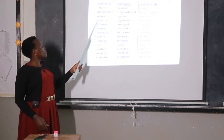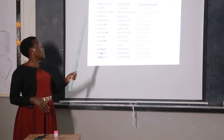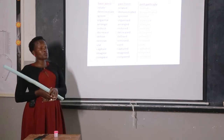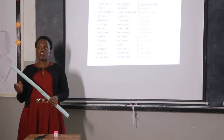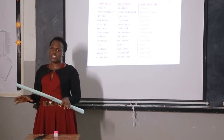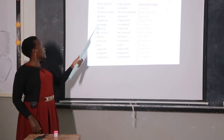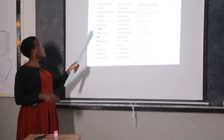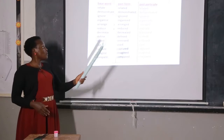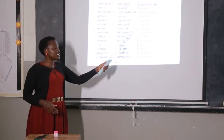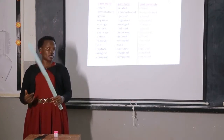We have the word 'organize.' In past form: 'organized.' In past participle: 'organized.' For example: I organized my bedroom neatly. We have the word 'arrange.' In past form: 'arranged.' In past participle: 'arranged.' For example: I arranged my books neatly on the desk.